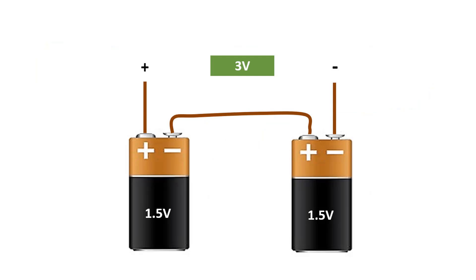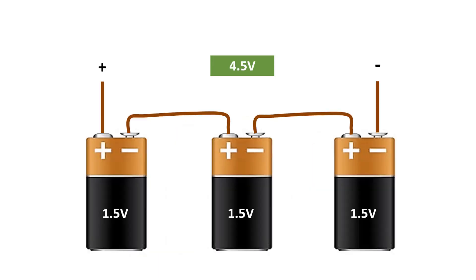When we connect the batteries in series, we get higher voltages. When we connect two 1.5 volt batteries in series, we get 3 volts. And when we connect three batteries in series, we get 4.5 volts.